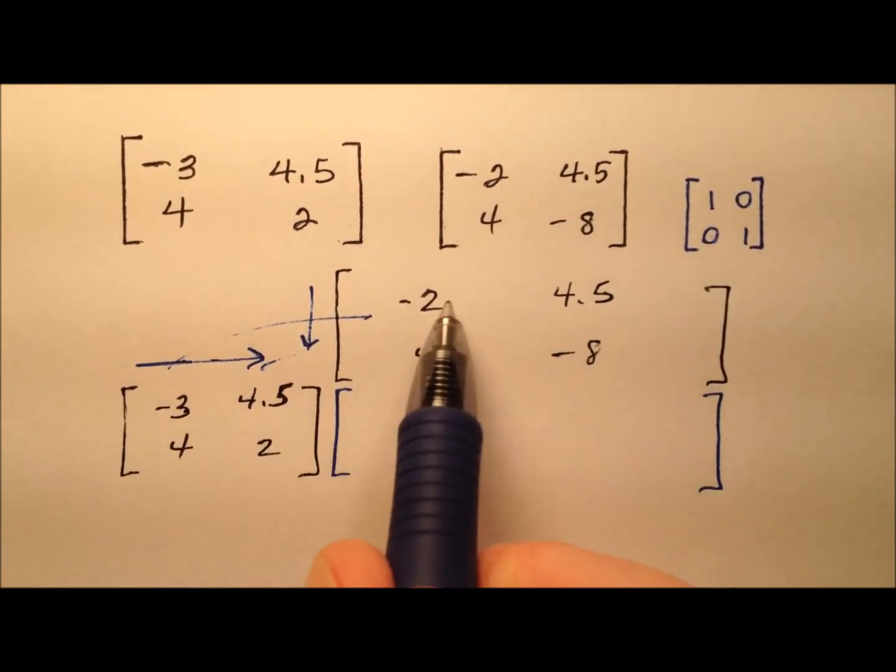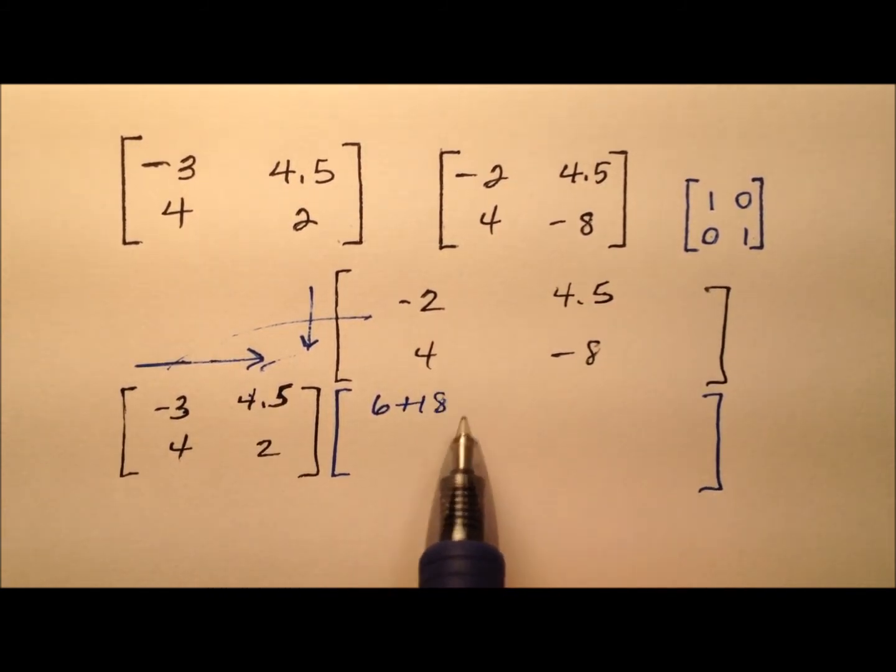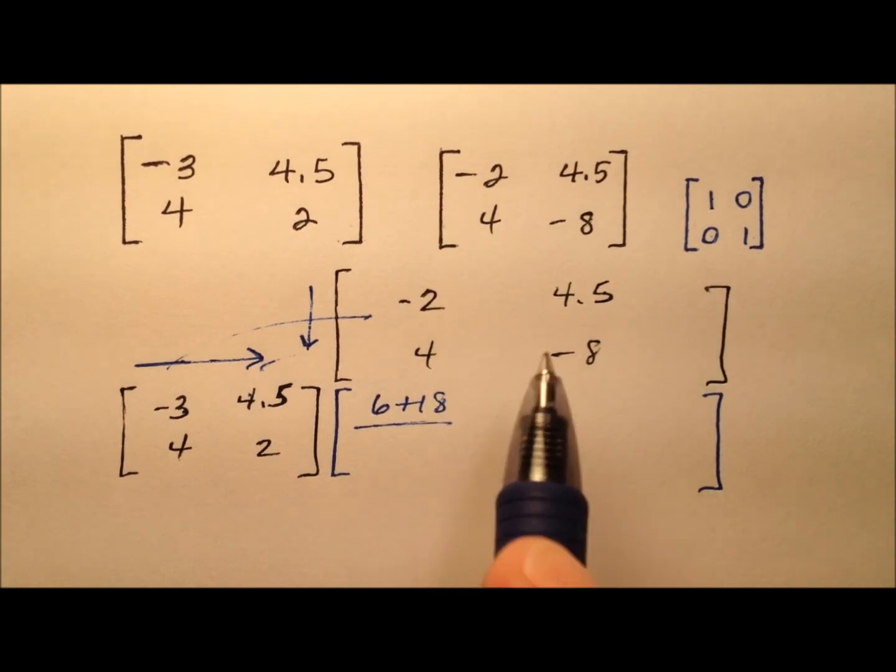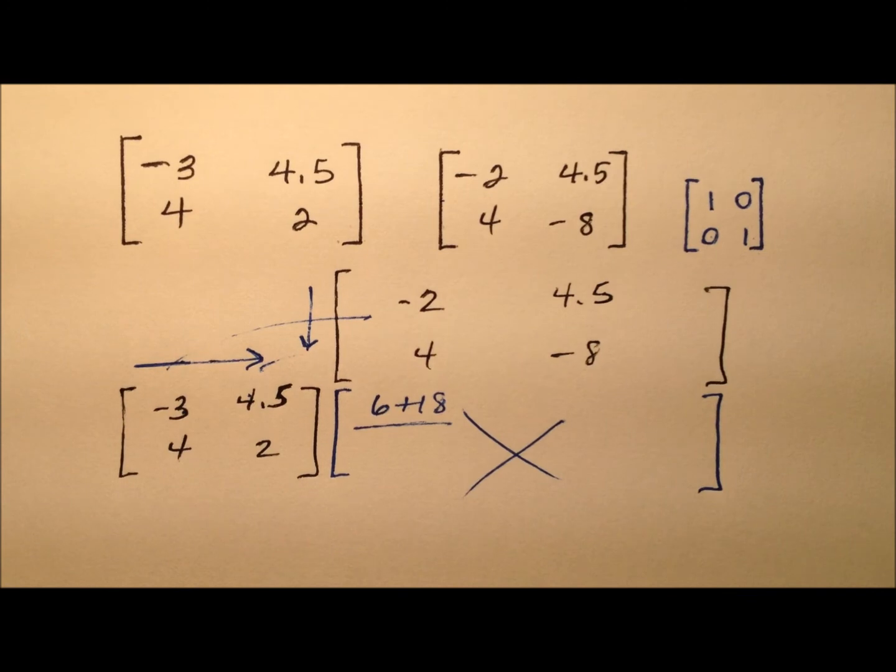So negative 3 times negative 2 first is 6. 4.5 times 4 is 18. And 6 plus 18, well, that is not going to be a 1. So we actually can tell already that this is not going to work. So these two square matrices are not inverses of one another.